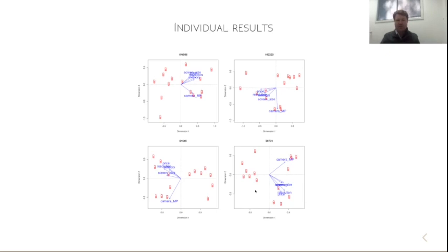So, in this particular instance, all these four participants have quite similar patterns in terms of their data. They have camera megapixels orthogonal to the other four attributes. But you can see there's differences in the actual solutions here.